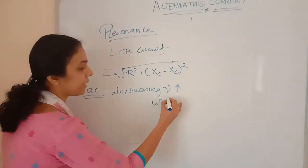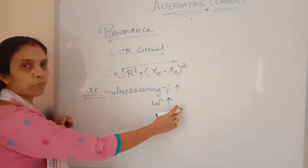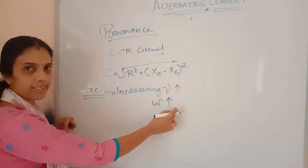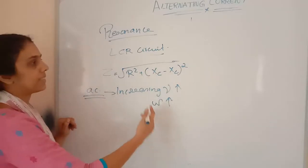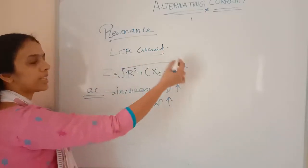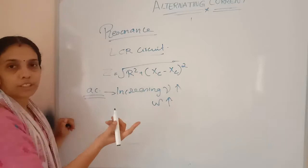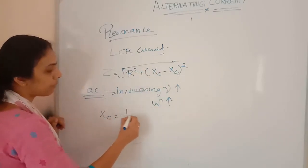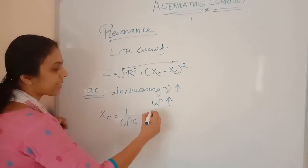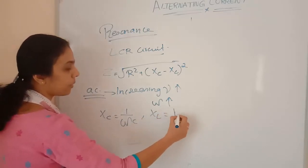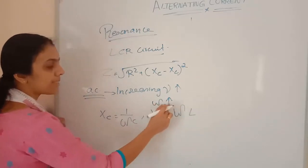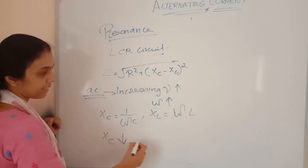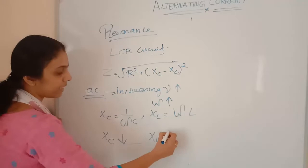Omega will increase. Omega equals 2π times ν. Therefore as ν increases, omega will increase. If omega increases, what will happen to the impedance? R won't be changing in any way. But XC equals 1/(ωC) and XL equals ω times L. As omega increases, XC will be decreasing and XL will be increasing.